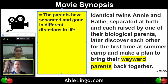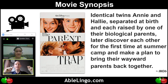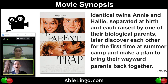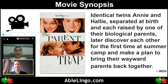So let's do it one more time. We're going to read it — I'll read it, then you read it. And then we'll pause and give the viewers a chance to do pronunciation. Identical twins, Annie and Hallie, separated at birth and each raised by one of their biological parents, later discover each other for the first time at summer camp and make a plan to bring their wayward parents back together. We'll pause just for a moment for the viewers to do pronunciation.